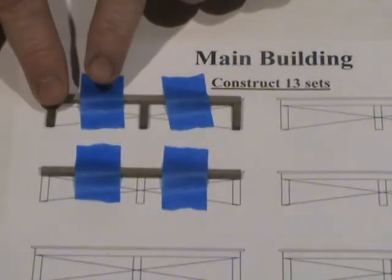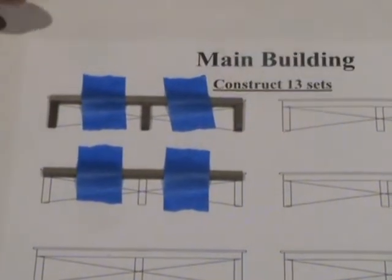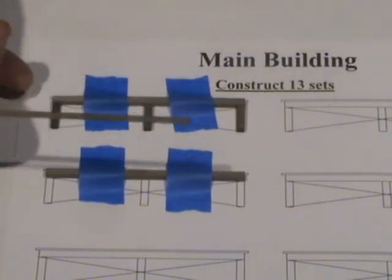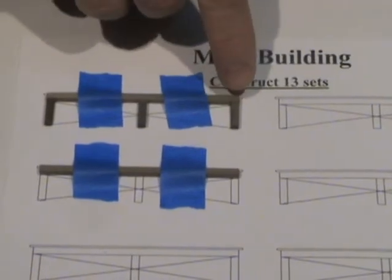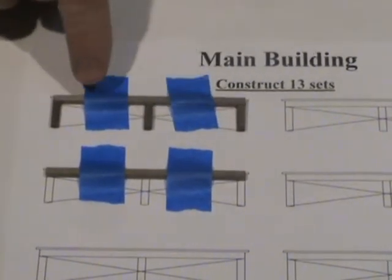Once you have the legs in position, then you take the cross piece. This is actually a very important part of the construction because the cross piece will be glued right over the joints to help hold the joints together.